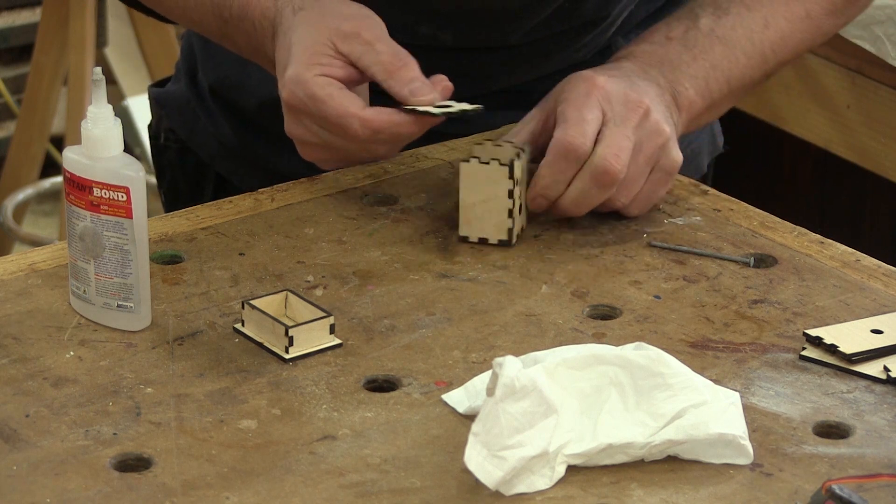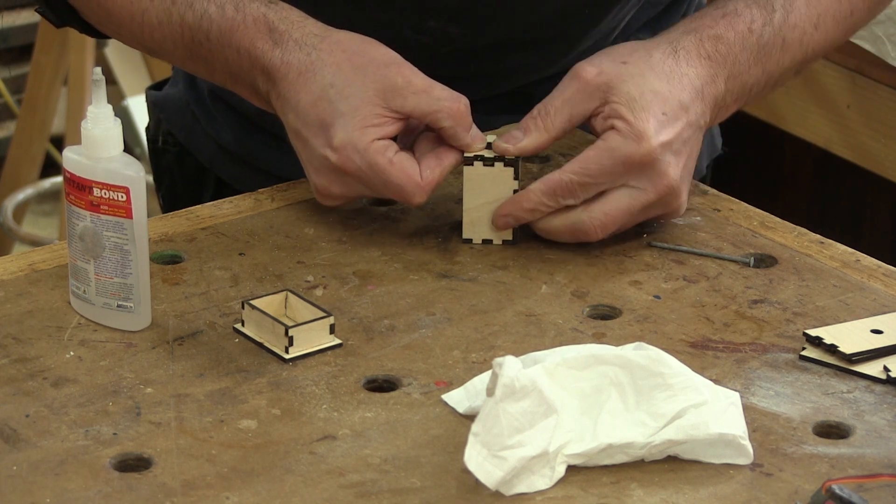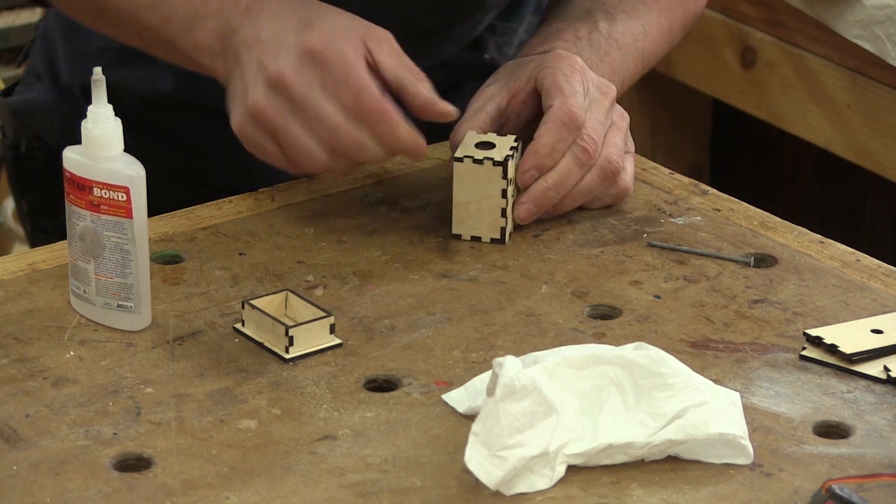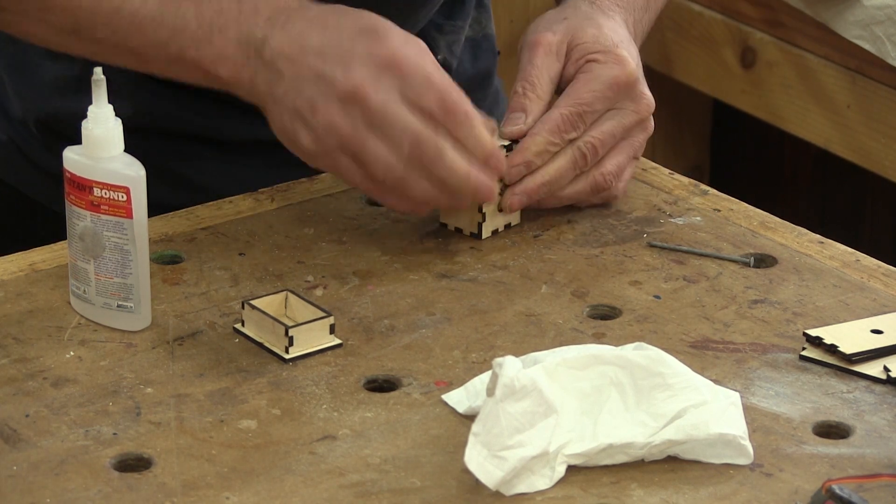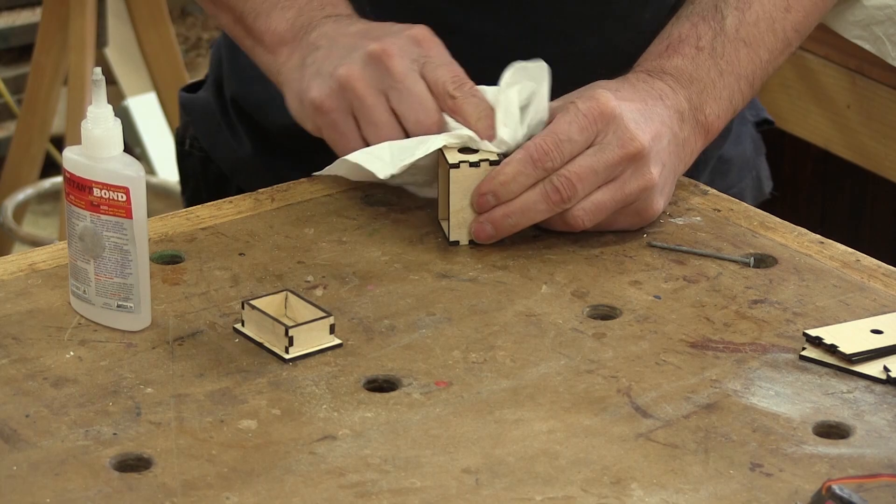This box is quite small. So all the pieces are glued in place with instant glue. There are two parts to this box. They both need to be glued.